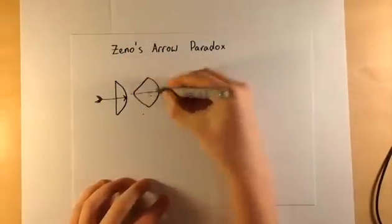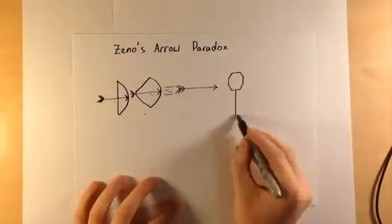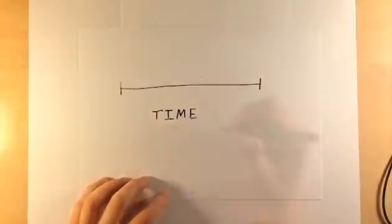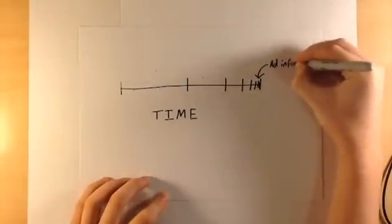Zeno proposes that an arrow in flight never moves. This seems of course totally insane, however it is rooted in perhaps reasonable assumptions. First, Zeno assumes that we can divide time into an infinite number of durationless points.